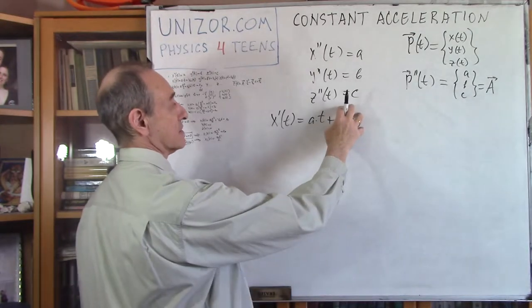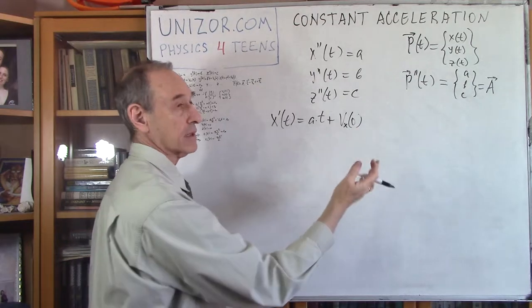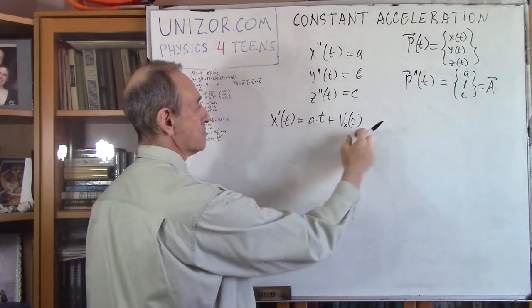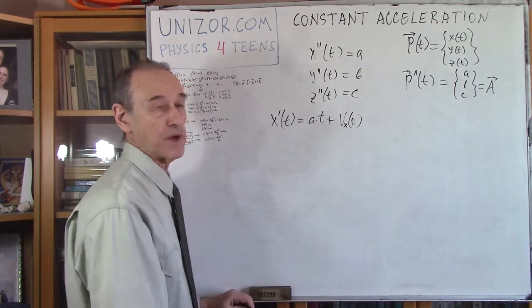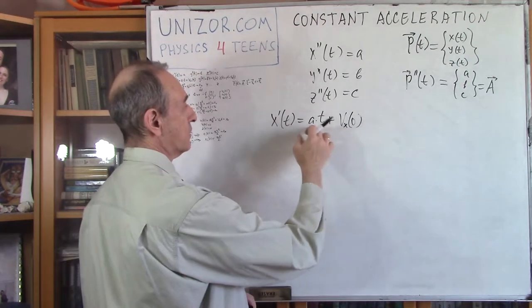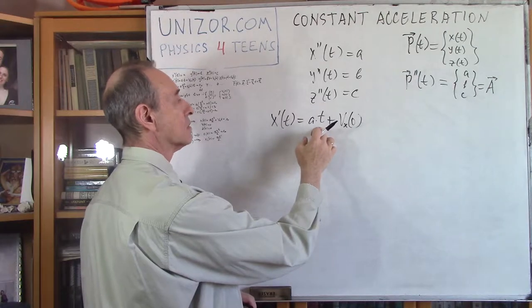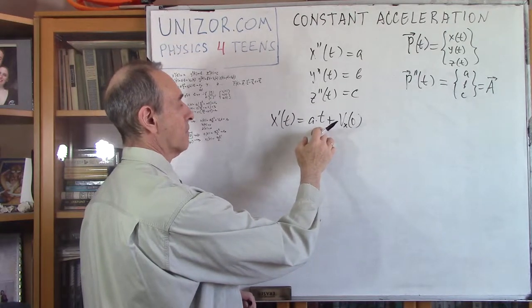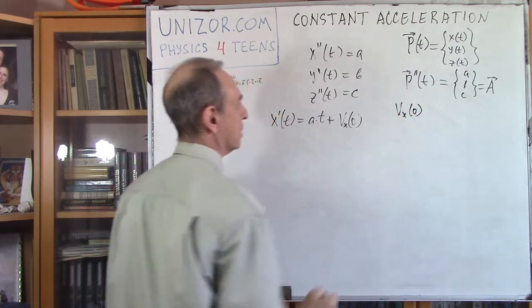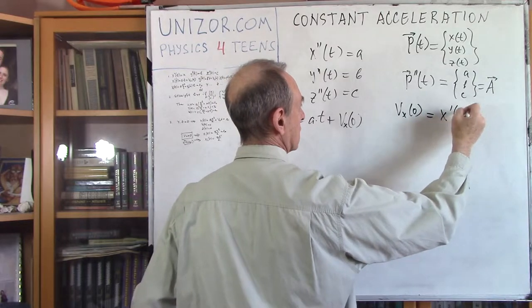It's very easy. The first derivative is some constant times t plus an unknown constant, and I have to add that constant because adding a constant to a function doesn't change the derivative. This describes all possible functions whose derivative equals constant a. If I put t equal to 0 in this formula, I get that this constant, which I symbolize as vx0,